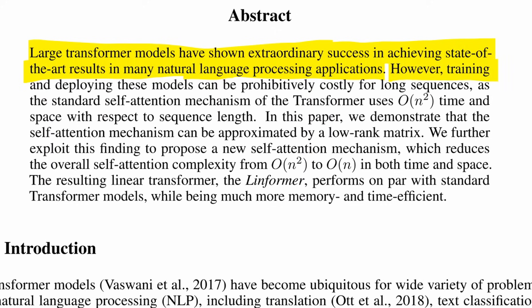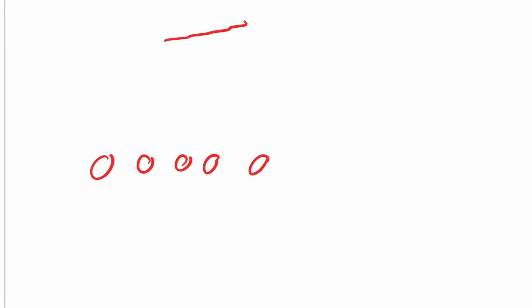They say, however, training and deploying these models can be prohibitively costly for long sequences, as the standard self-attention mechanism uses n-squared time and space with respect to sequence length. To recap: transformers transform one sequence into another. Here we have five tokens, and the next layer outputs five tokens. The question is how do you route information between these five tokens from one layer to produce the next? In a feed-forward network, you connect everything to everything and learn the weights of those connections.